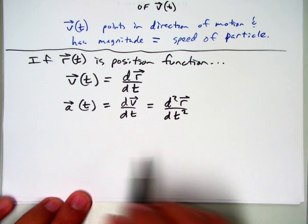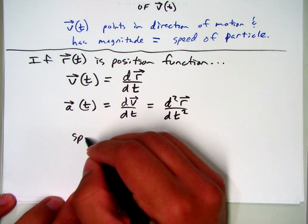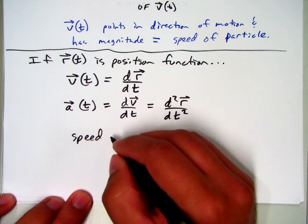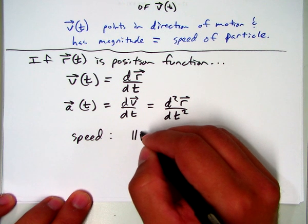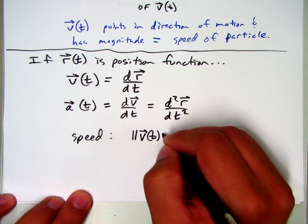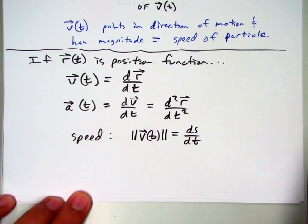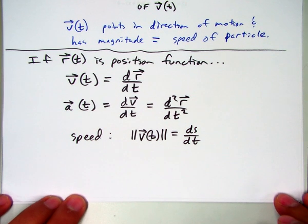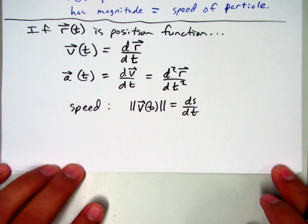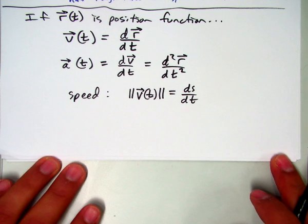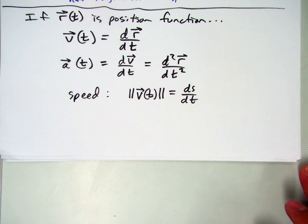And speed. We define that as the magnitude of v(t), which is the same as ds/dt. Any questions?